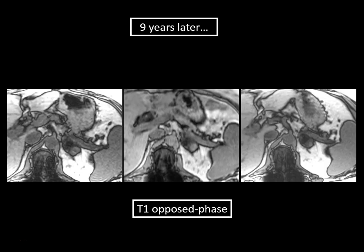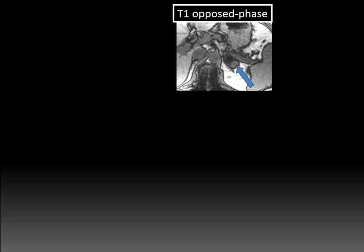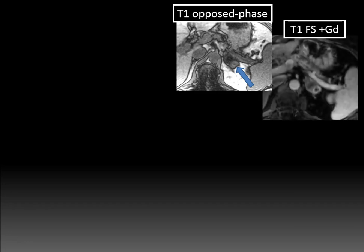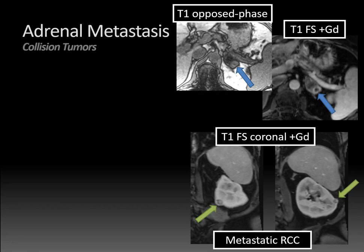Jumping ahead nine years later, we have three separate MRIs showing opposed-phase T1-weighted images, arranged oldest on the right and newest on the left. The adrenal adenoma shows signal dropout again, but there's also a new area of defect in the dropout region that is enlarging over time. On the T1 opposed-phase image, the defect within the area of signal dropout is apparent. On the post-contrast image, there's a rim-enhancing lesion within this adrenal gland. T1 fat-suppressed coronal post-contrast images show multiple solid-enhancing renal masses indicating recurrent metastatic renal cell carcinoma — another example of a collision tumor, this time a renal cell metastasis to a gland containing an adrenal adenoma.